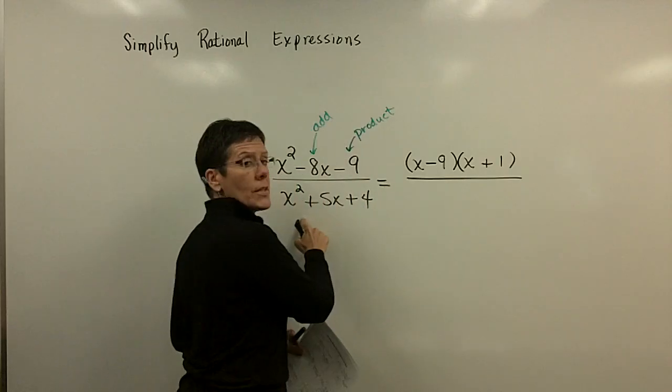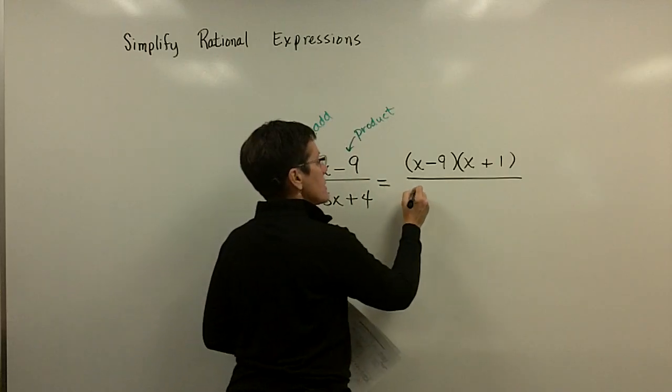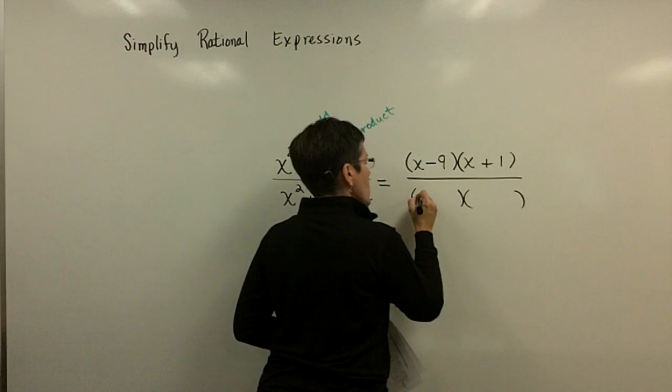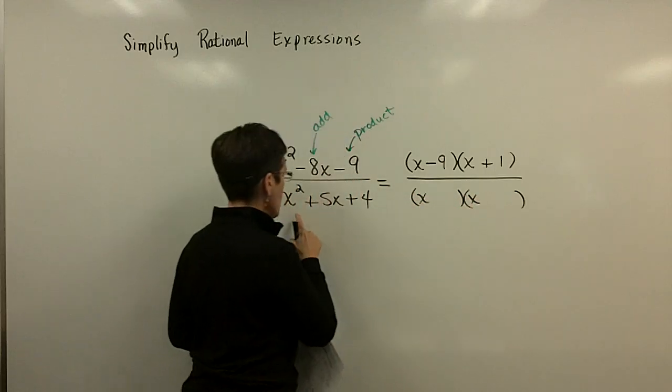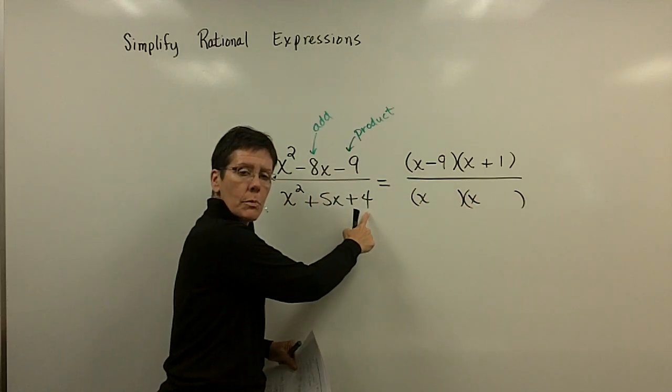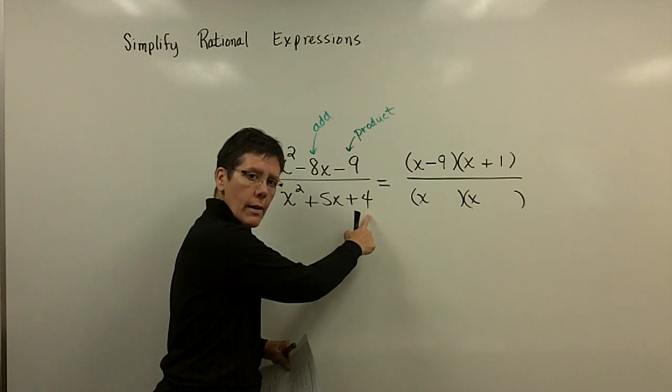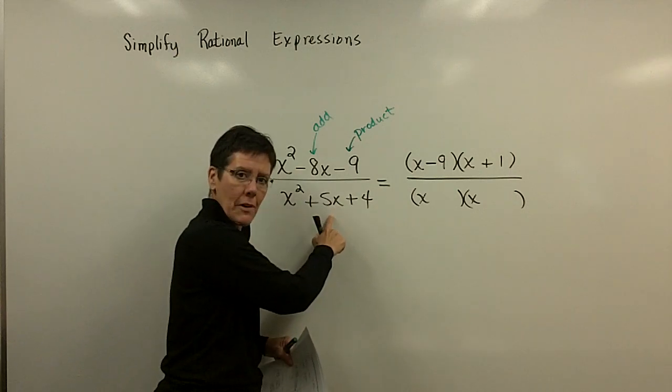Downstairs, I want to factor this trinomial as well. And it's got a 1 in front of the x squared term. So I'm going to put an x in the front of each of these because of that x squared term. And I'm now looking for two numbers whose product is 4 and adds to be 5.